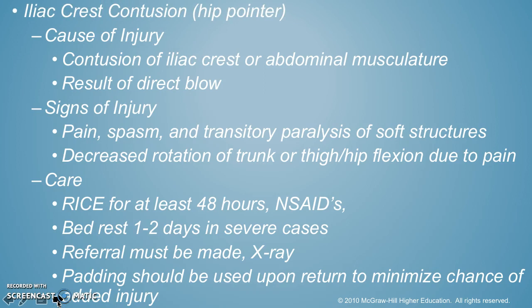Iliac crest contusion, also known as a hip pointer. I want you to write down an instance where you think someone could get a hip pointer — read through this and write down what you think a person could do to get one. It's a bruise on the iliac crest, that part that kind of sticks out — it's a direct blow. Think about some sports that could involve that. Signs include pain, spasm, maybe a little bit of paralysis where you feel like you can't move — though it comes back pretty quickly — and then decreased rotation of your trunk. You've got to RICE for at least 48 hours, take some NSAIDs, and maybe bed rest. Hip pointers can be pretty painful — you've probably seen NFL players miss games because of it. When you come back you're going to need padding to minimize the risk of more injury.